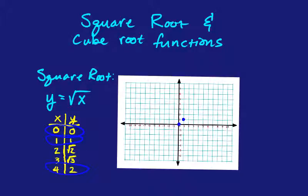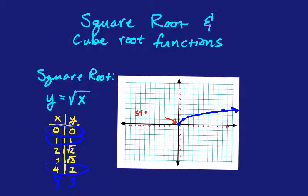I'll plot those points: 0,0 then 1,1 then 4,2. Another x value that works is 9 — plugging in 9 gives the point 9,3, so I'll put that point on the graph too. A square root function graphs this kind of arc that doesn't go all the way to the left and right — it just starts at a singular point, which we'll call the starting point. Then it goes to the right or left depending on the transformations. It's kind of like half of a parabola on its side.